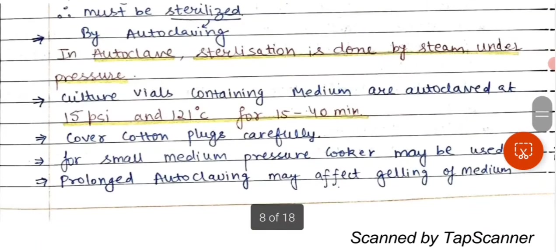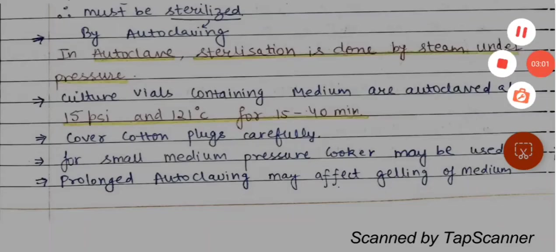Sterilization in the autoclave is done by steam under pressure. When we autoclave a substance, the water present in the autoclave boils to 100 degrees Celsius. Since it is a closed vessel, pressure increases inside, and as a result the temperature of the water rises up to 121 degrees Celsius, at which all microorganisms are killed.